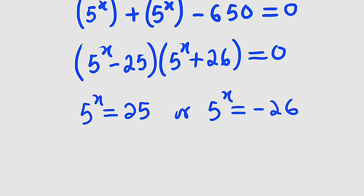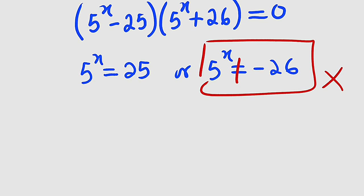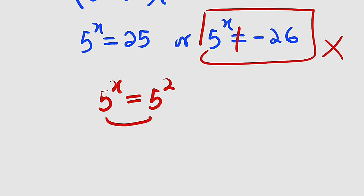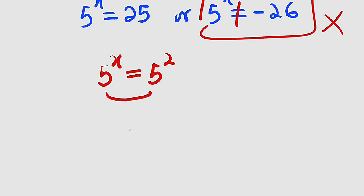But you should know that this exponential function cannot be negative, so we are going to discard this solution and consider this one. If 5 to the power of x equal to 25, we can write 25 as 5 squared. And since the bases are the same, it implies the exponents are also the same.